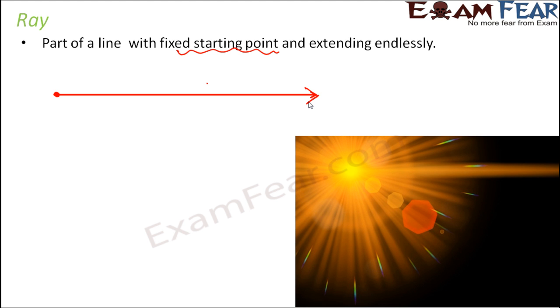The example of ray would be the sun rays - light coming from the sun. Since the source is fixed, one end is fixed but the other end reaches infinitely to any place. Similarly, the light coming out of the torch is also an example of a ray because you have one end fixed which is the torch and the other end is reaching out infinitely.